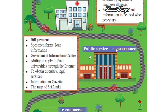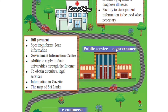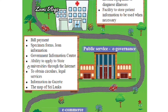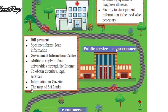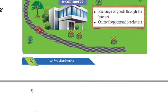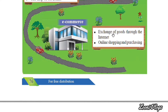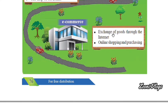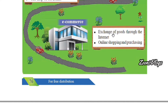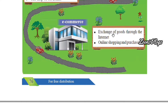Moving to public services and e-governance: nowadays we can see bill payment, specimen forms, loan information, government information centers, the ability to apply to state universities through the internet, obtaining circulars, legal services, information in the Gazette, and the map of Sri Lanka — all using ICT. The other area is e-commerce: the exchange of goods over the internet. During the ongoing pandemic, people can't go out so they order from the internet, ordering and exchanging goods through online shopping and purchasing.